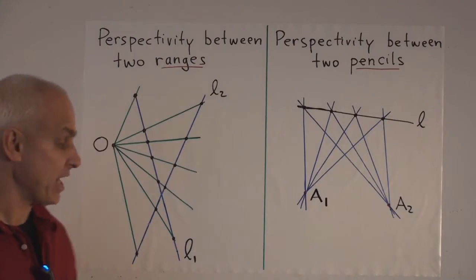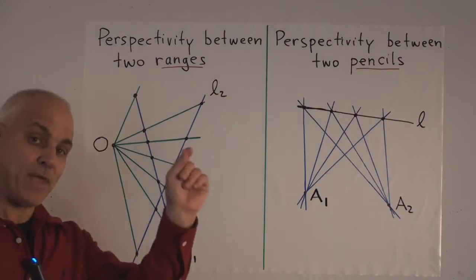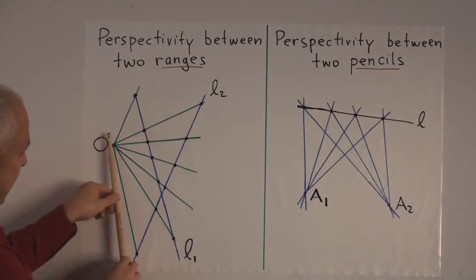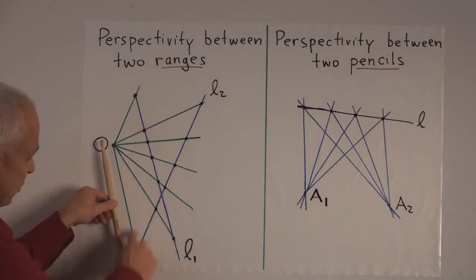To make that statement precise, I remind you that we also have to include that special point at infinity that's on each of the lines. Because, for example, if you take this line through O, it intersects our line L2 at this point, but it's actually parallel to L1.